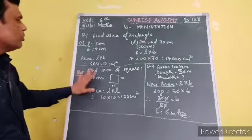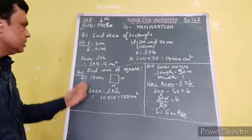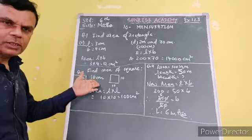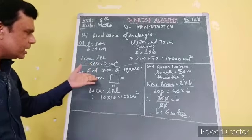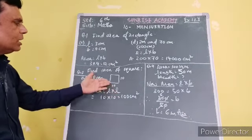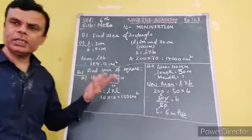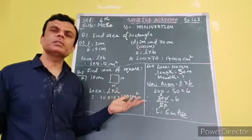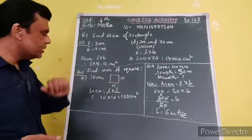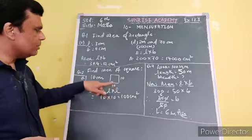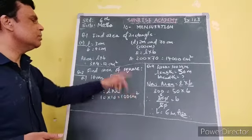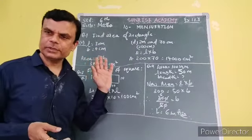Now, in question number 2, find the area of square in which the side length is given. When you have to find the area of square, then length multiplied by length, because all sides are equal in a square. So, 10 multiplied by 10, L multiplied by L. 10 times 10 is 100. So, 100 square centimeters is your area.